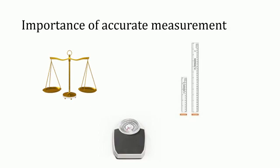How accurate a measurement must be depends upon its purpose, and an appropriate device must be used accordingly. Accuracy refers to the closeness of a measured value to a standard or known value. By taking accurate measurements we can understand the world around us and make decisions based on outcomes. Measurement of substances that are precious or used in very small quantities must be done accurately. Due to advancements in science and technology, devices that measure very small magnitudes of distance, mass, time, and temperature are now available. For example, distance and time measurement is very important in sports competitions.